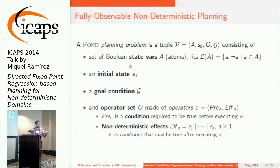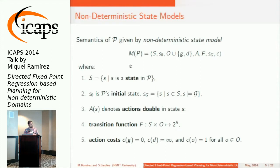Our model of planning: FOND problems are usually represented in a factored form where we have a set of Boolean state variables. In our case we use literals with explicit negation, an initial state, a goal condition, and an operator set where operators are made up of preconditions — which specify the condition necessary for the action to be valid — and a set of non-deterministic effects, which describe the possible states you may end up in after doing that action. The semantics correspond to the more traditional flat state representation of non-deterministic models, where we have a set of flat states, initial state, a function that tells us which actions can be done in a particular state, a transition function, and action costs.